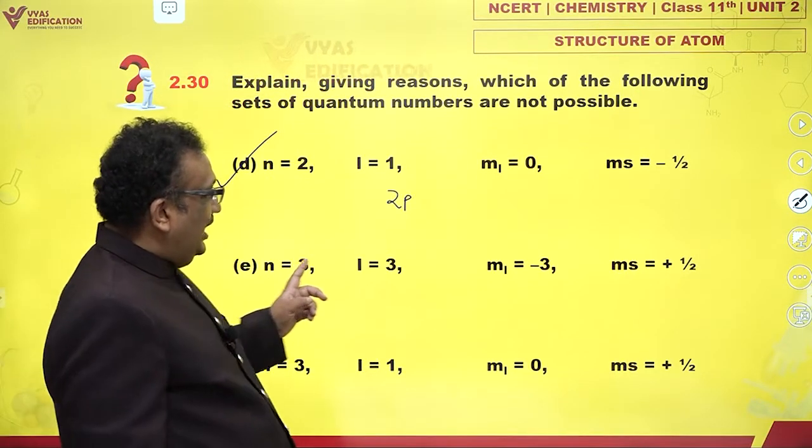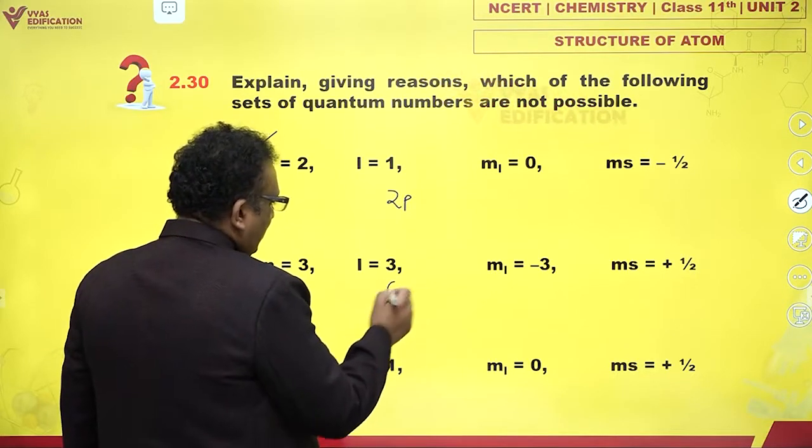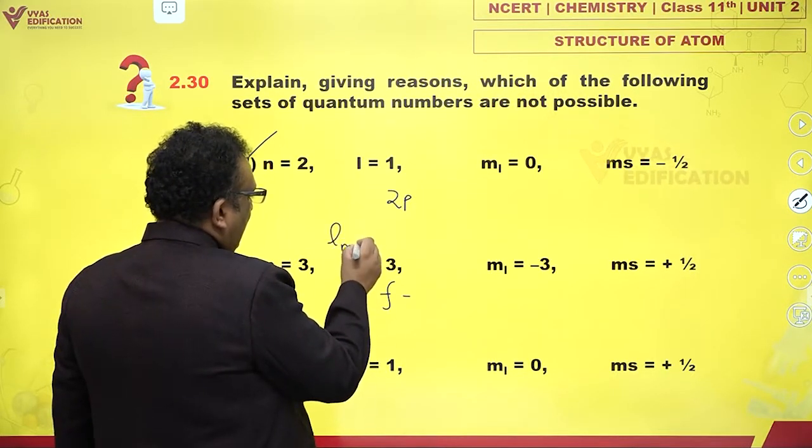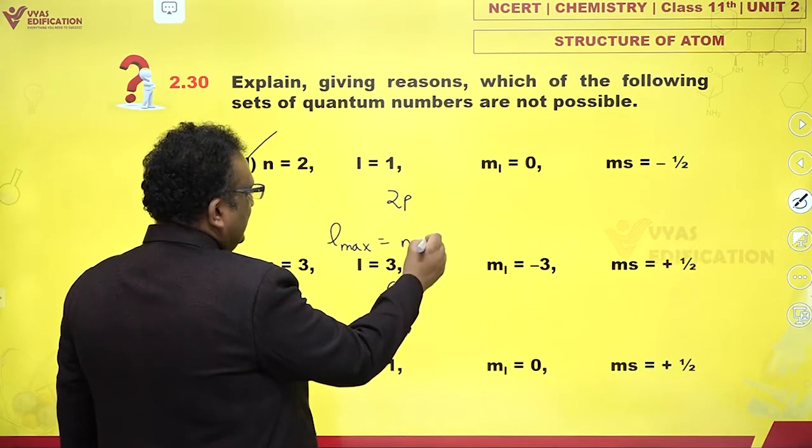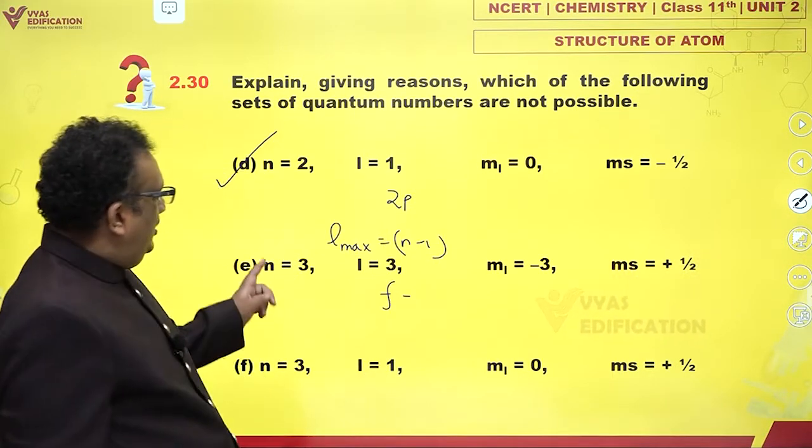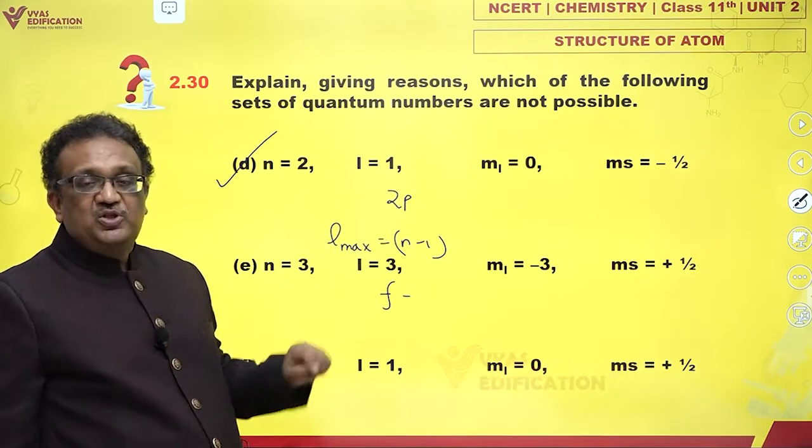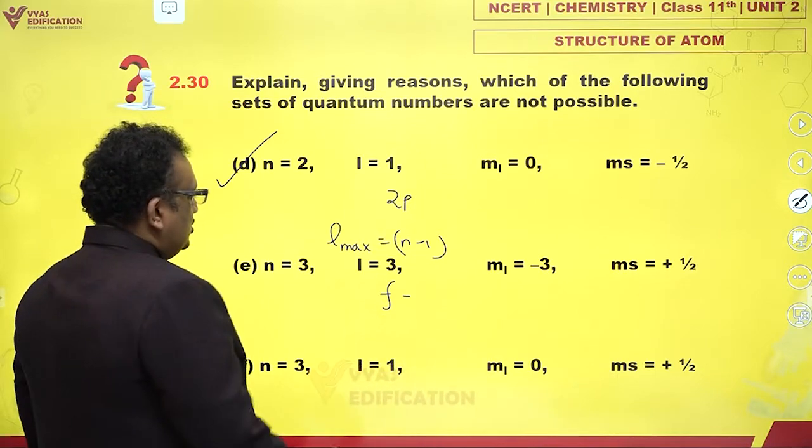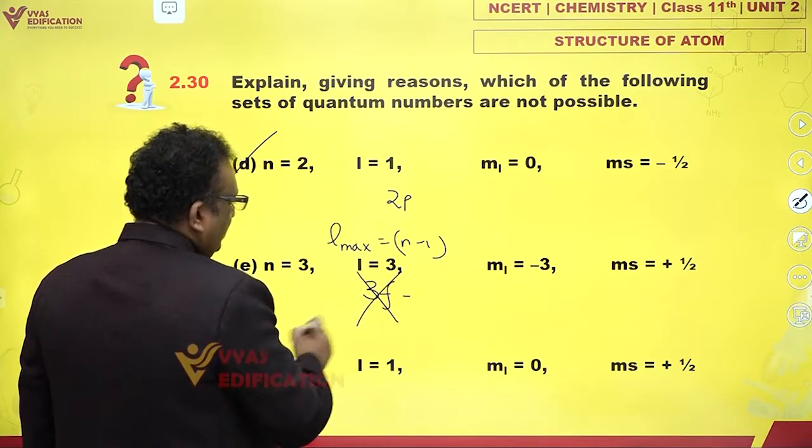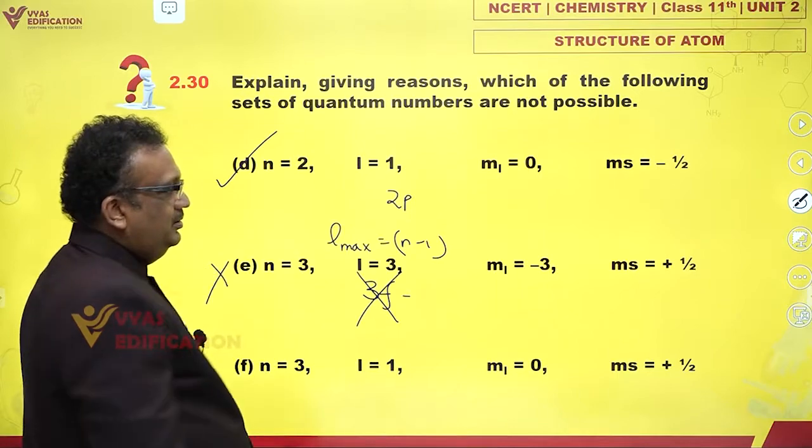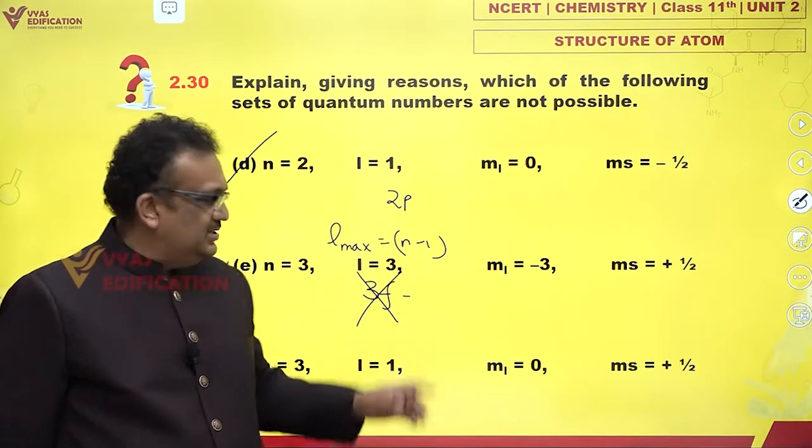n equals 3, l equals 3. Oh my god. This means f orbital. Please note, l maximum is n minus 1. So maximum l which is possible is 2. So since 3f is not possible, this is wrong. There is no need to see here. This is by itself wrong.